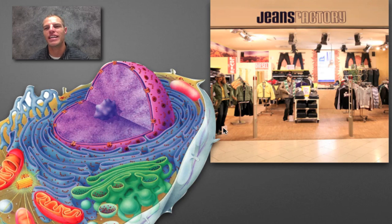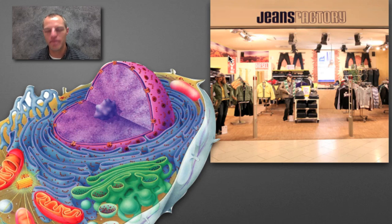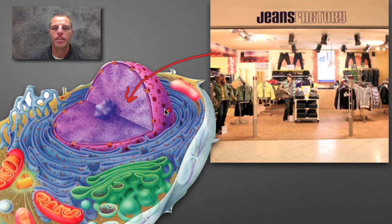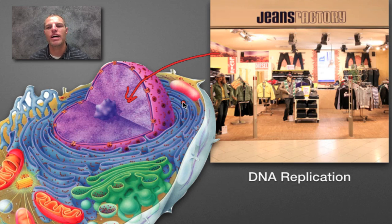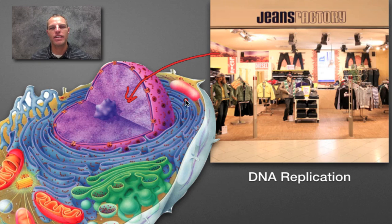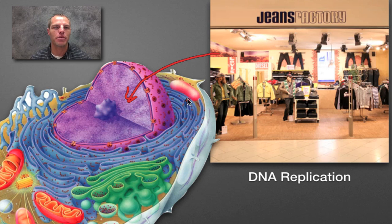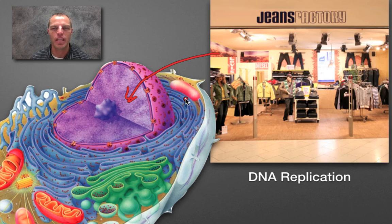The first factory a virus has to overtake is the gene factory — and yes, there's actually a place called the gene factory. The gene factory is right here in the nucleus, where DNA gets copied. The process I'm talking about is DNA replication. This mechanism inside the cell replicates DNA, and the virus needs to hijack that because it needs to replicate its own viral genetic material, whether viral DNA or RNA. So it has to take over the gene factory.